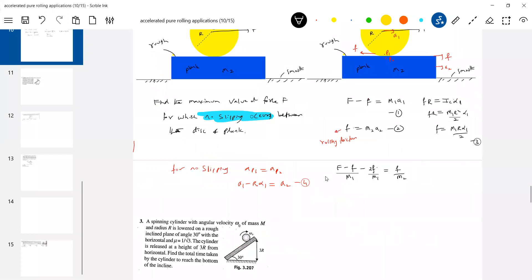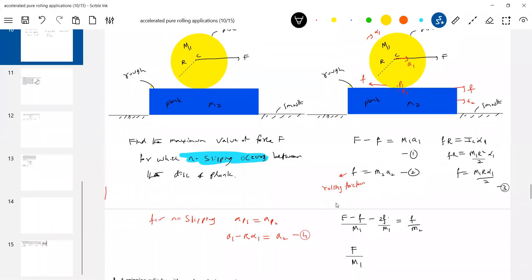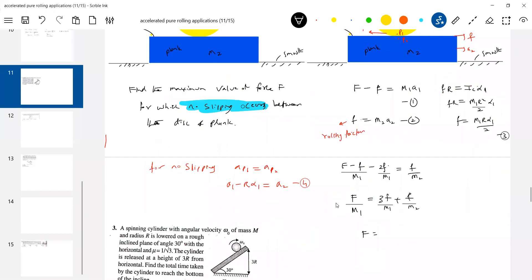So I'll further continue this. This will be F by M1. I think you are able to see this, F by M1, so this will be 3F by M1. So therefore what is the expression for F? F you take outside, 3M2 plus M1, or 3 plus M1 by M2. F is equal to 3 plus M1 by M2 times small f.